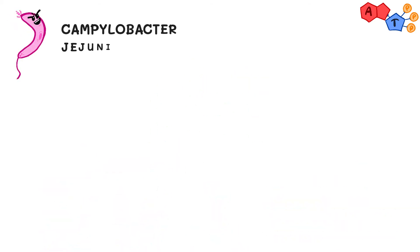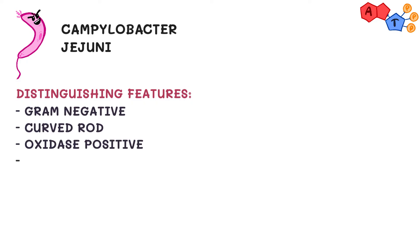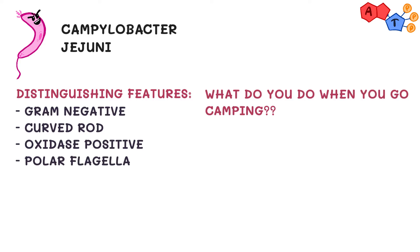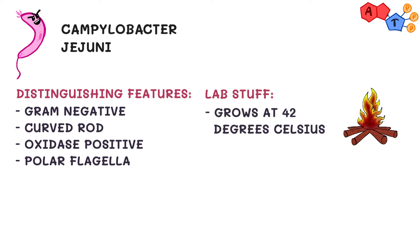The first organism we'll talk about today is Campylobacter jejuni. For the distinguishing features of this organism, note that we'll be mentioning the same statement three times in today's video: gram-negative curved rod, oxidase positive with polar flagellum. When you go camping, you light a campfire — likewise, Campylobacter grows at a relatively hot temperature of 42°C.